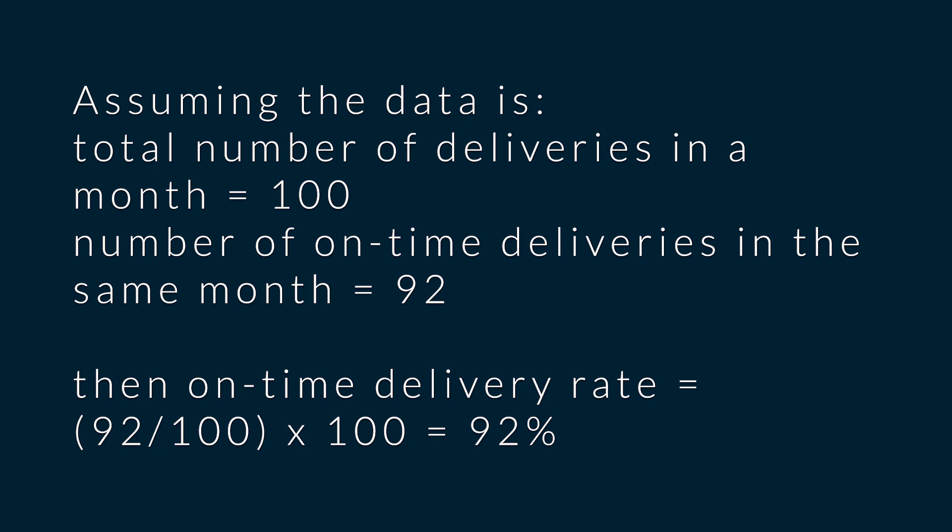Let's take a practical example. Assuming the total number of deliveries in a month is 100, and the number of on-time deliveries in the same month is 92, then on-time delivery rate is 92 divided by 100 times 100, which gives you 92%. Remember, in this example our target was 95%.